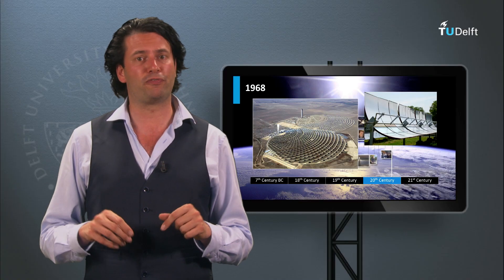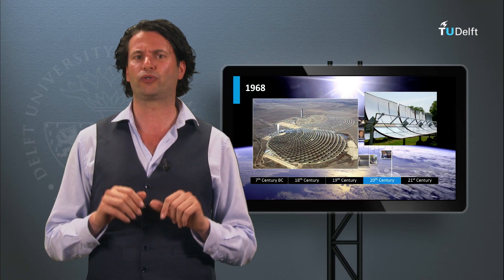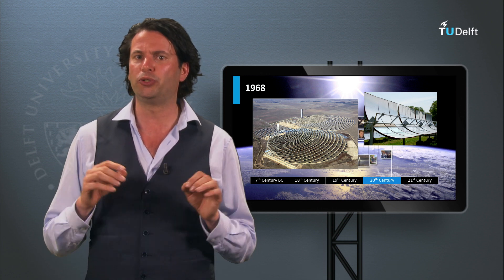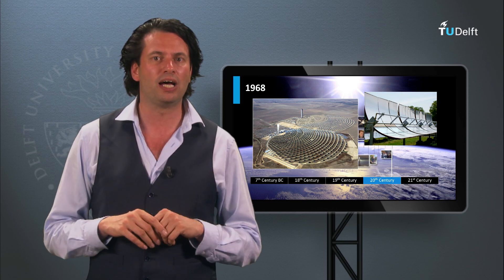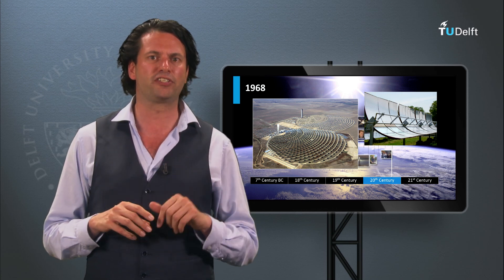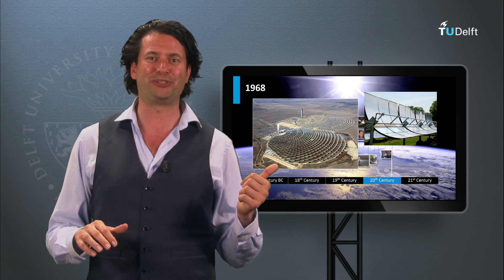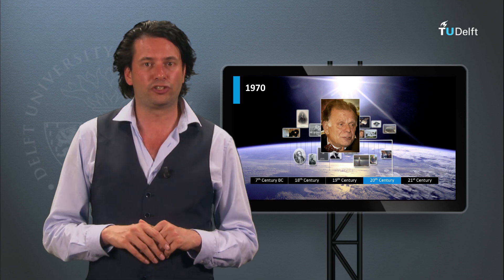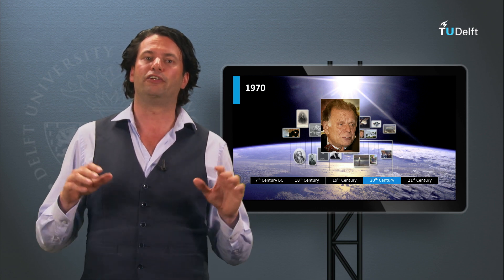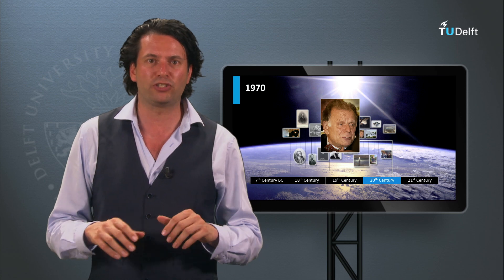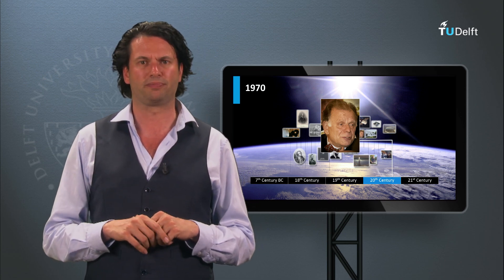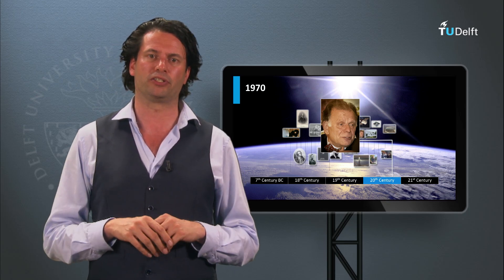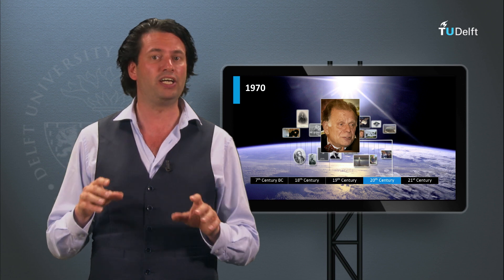In 1968, Professor Giovanni Francia built the first concentrated solar power plant near Genoa in Italy. The plant was able to produce 1 MW with superheated steam at 100 bars and 500 degrees Celsius. Note that the pictures shown do not reflect the plant in Italy. In 1970 in the Soviet Union, Zhores Alferov developed the high-efficiency solar cell based on gallium arsenide heterojunction solar cells, the first demonstrator of a solar cell based on 3-5 semiconductor materials. We will discuss this technology in week 5.